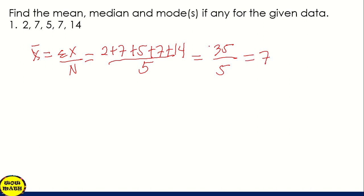So the mean value for this problem is 7. Next is the median. So in order to get the value of median, we need to arrange first the given data from lowest to highest. So we're going to arrange, start with 2, 5, 7, 7, 14. So the rule in getting the median, if we have an odd number, so we only have one middle value, and that is the median.